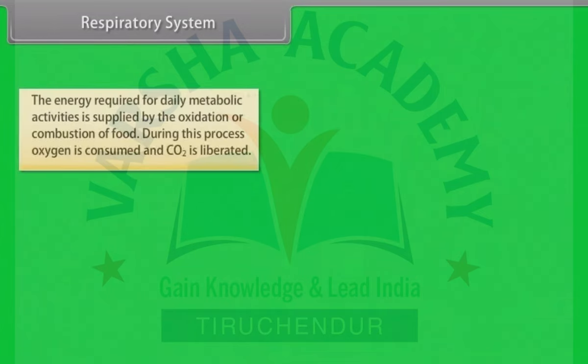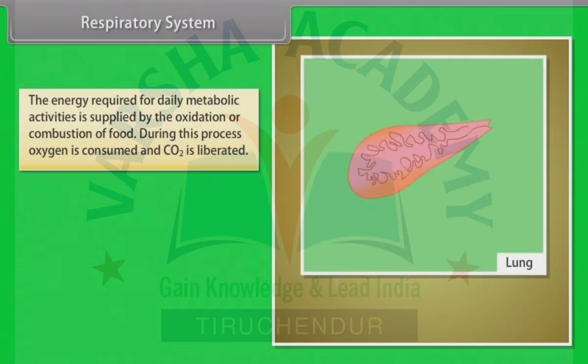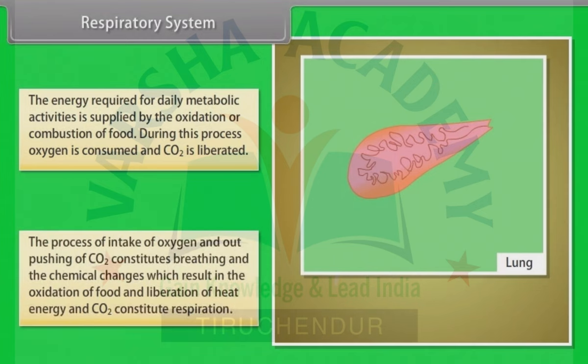Respiratory system: The energy required for daily metabolic activities is supplied by the oxidation or combustion of food. During this process, oxygen is consumed and CO2 is liberated. The process of intake of oxygen and outpushing of CO2 constitutes breathing, while the chemical changes resulting in the oxidation of food and liberation of heat energy and CO2 constitute respiration.